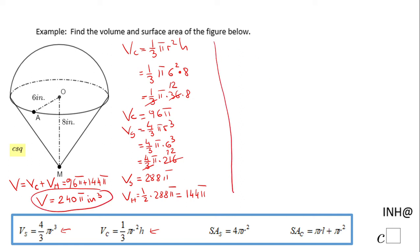Now we can move to the second part of this problem, which is the surface area. I'm going to start with the surface area of the cone. In fact, we're going to need only the lateral area of the cone, because we don't have the base circle in the surface area of this composite shape. The lateral area of the cone is just πRL. We know the radius, but we do not know the slant height.